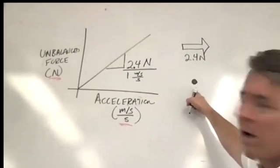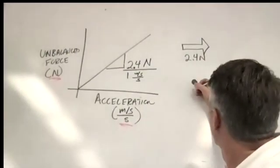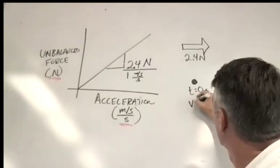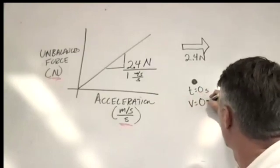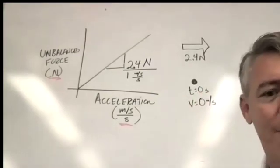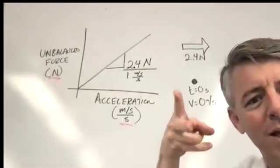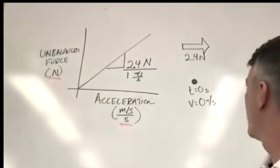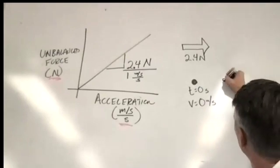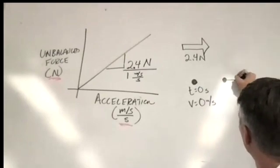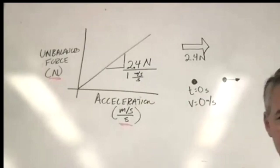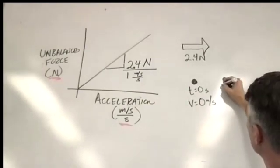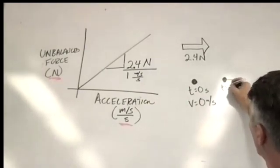So I'm going to start up here. At clock reading 0 seconds, it's moving at 0 meters per second. We saw that happen, didn't we? They're just sitting there, and then we cut that ribbon — or we saw someone cut the ribbon — and then sometime later, sometime later, it was moving. And I'm going to go ahead and let you know that this is at one second.